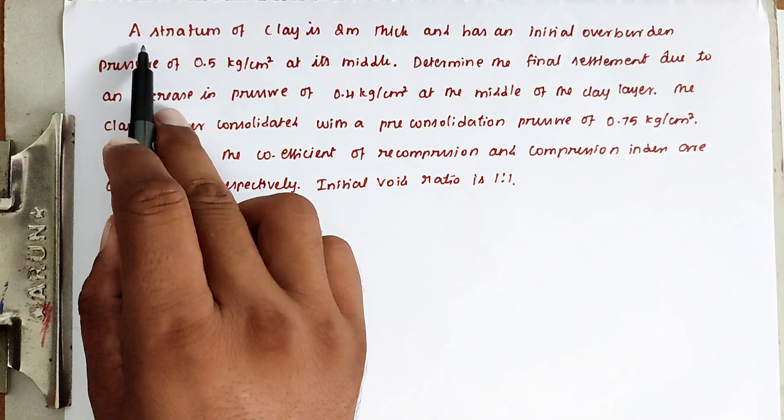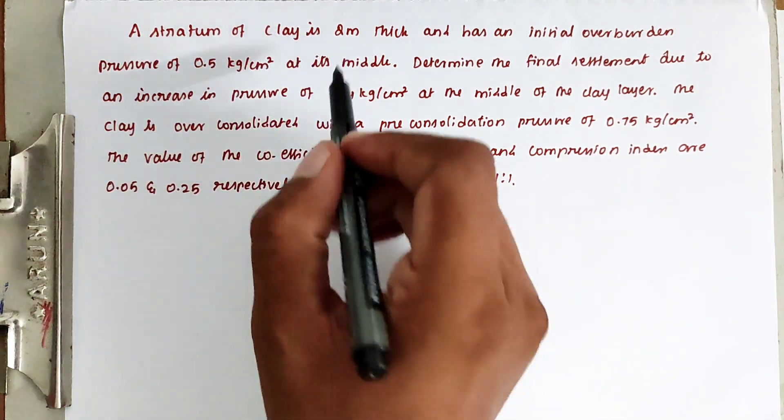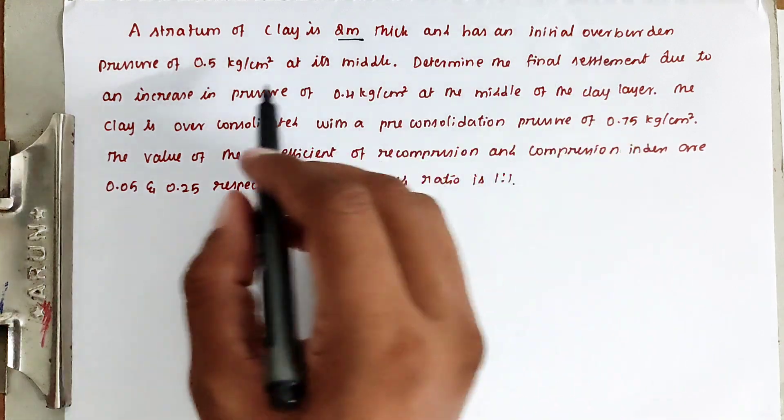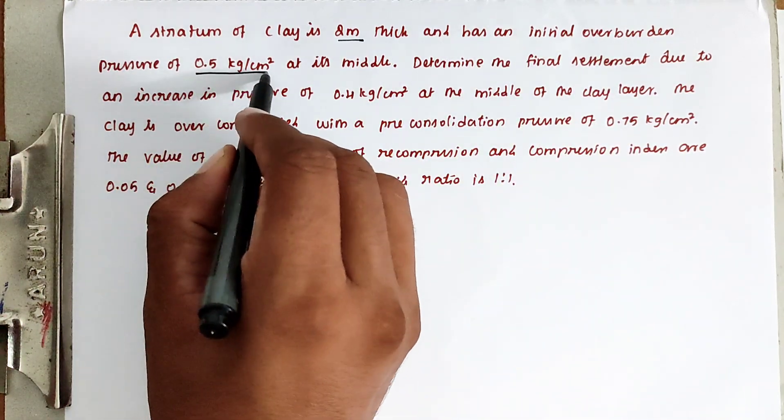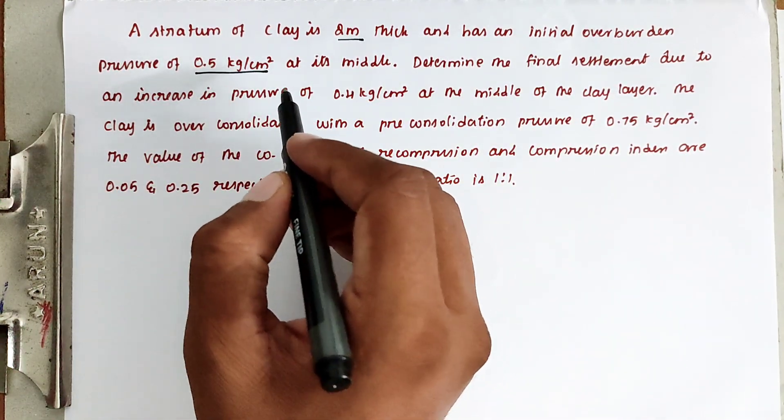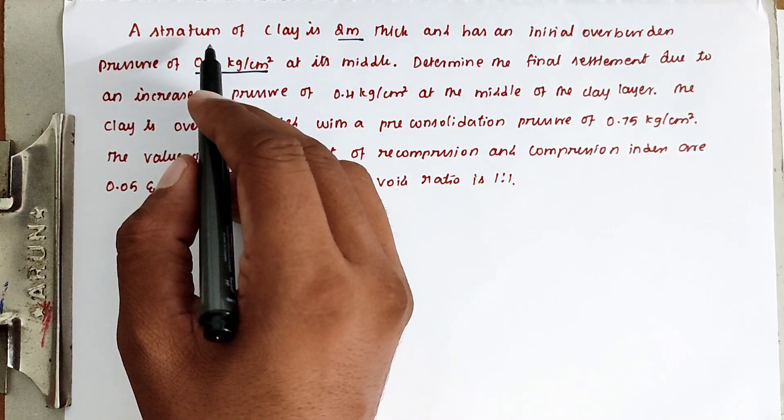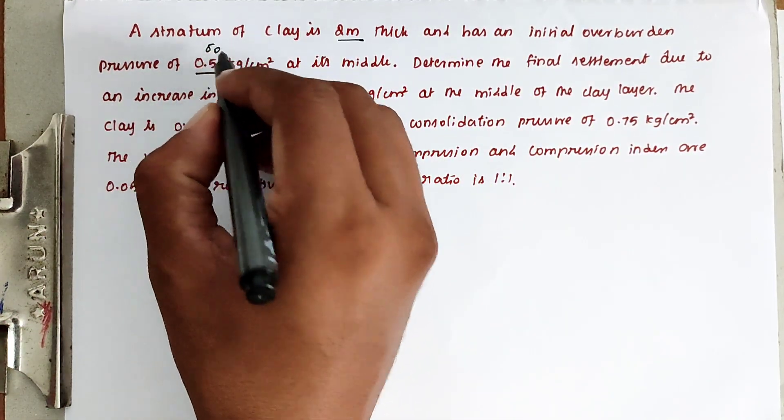The problem is: a stratum of clay is 2 meters thick and has an initial overburden pressure of 0.5 kg per centimeter square, so that is sigma naught.